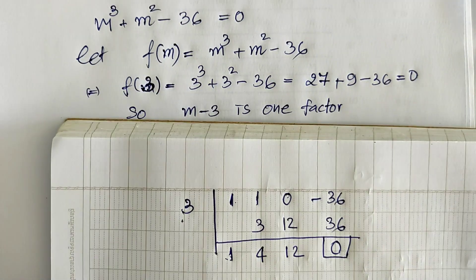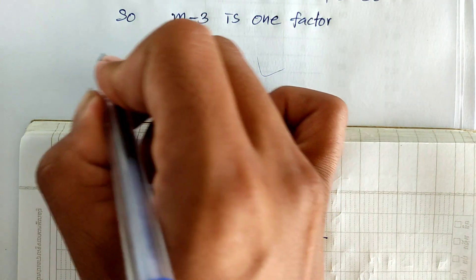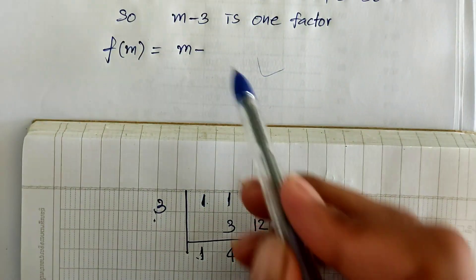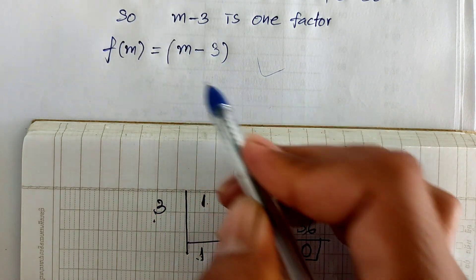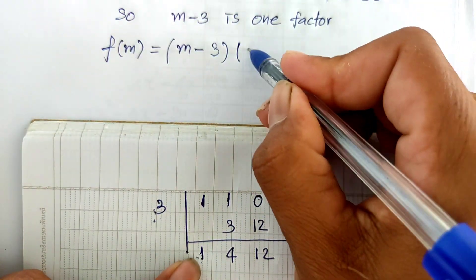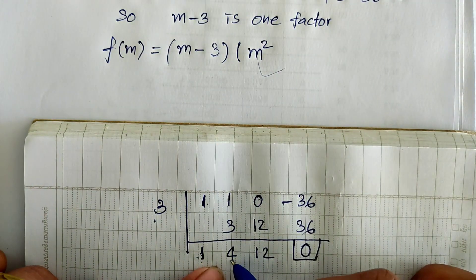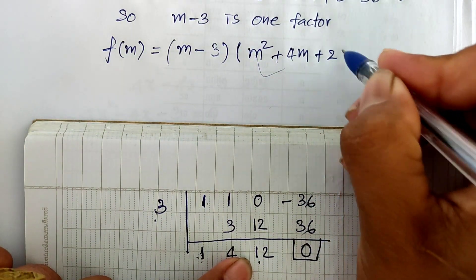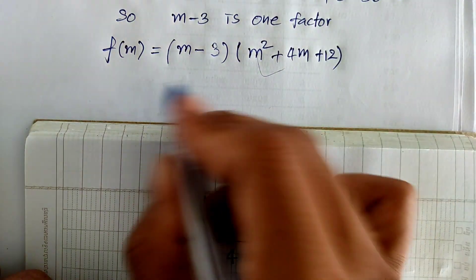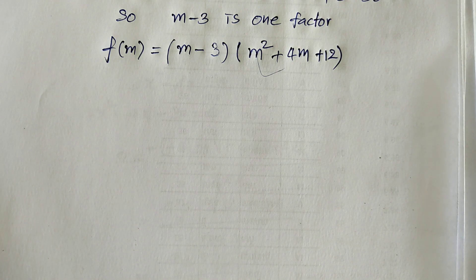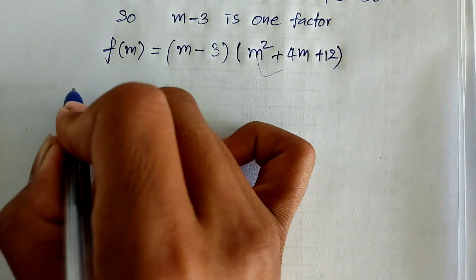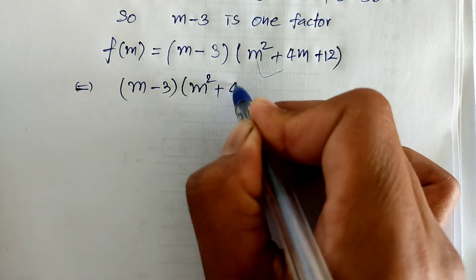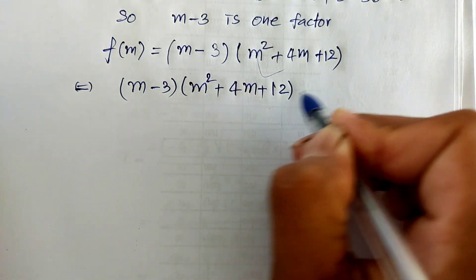Now our equation factors as f of m equals m minus 3 multiplied by m square plus 4m plus 12, and this equals 0. We now have two factors: m minus 3 times m square plus 4m plus 12 equals 0.